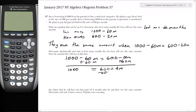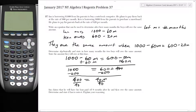Subtract 600 from both sides. That gives us 400 equals 40M. Divide both sides by 40.